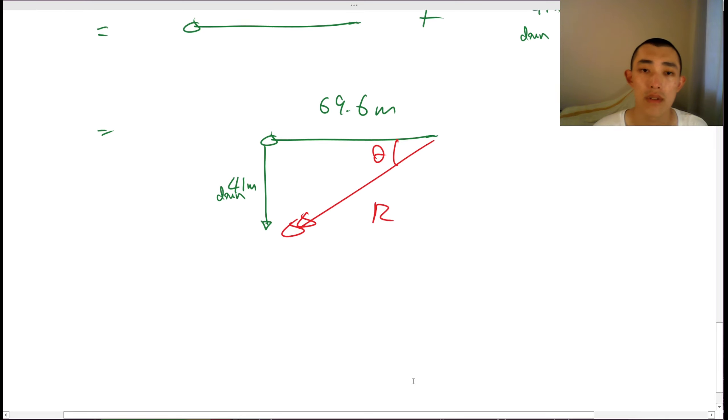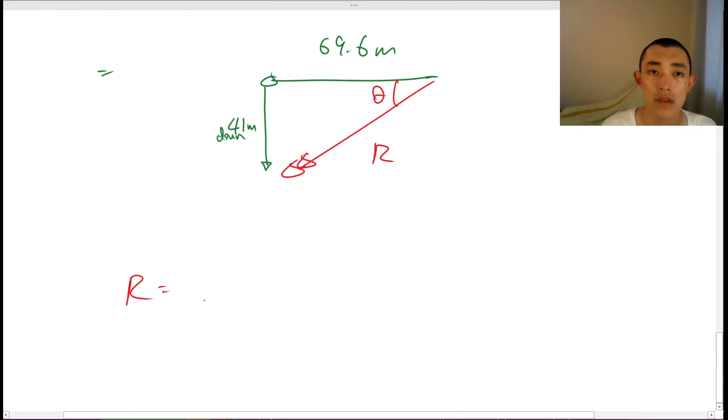That's our resultant, that's our angle. And so I can say that the resultant there, the resultant is equal to 41 squared plus 69.6 squared. This is just by Pythagoras.